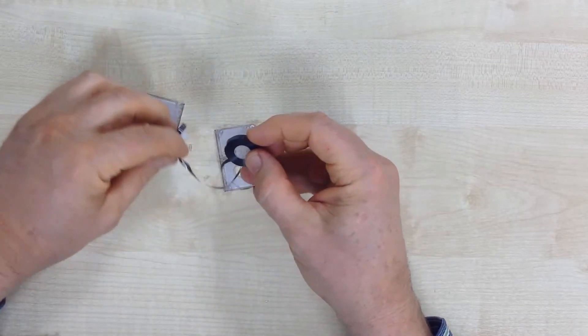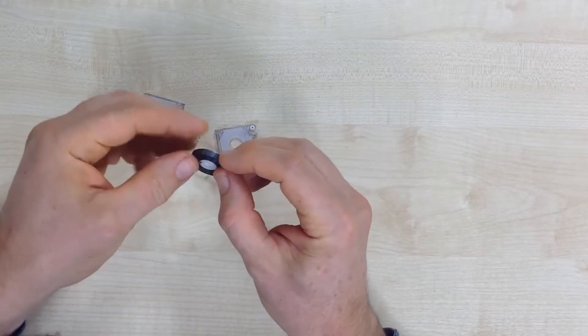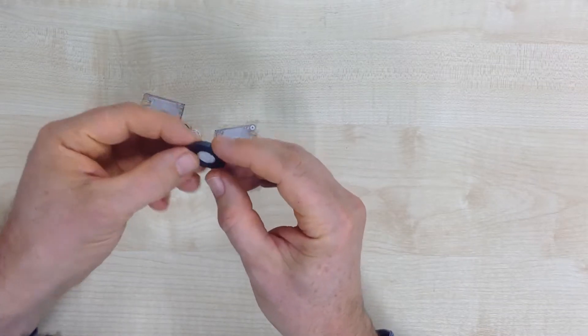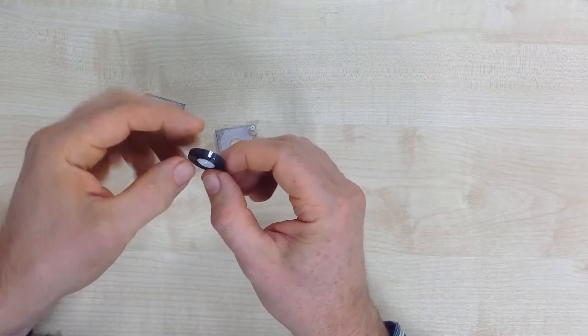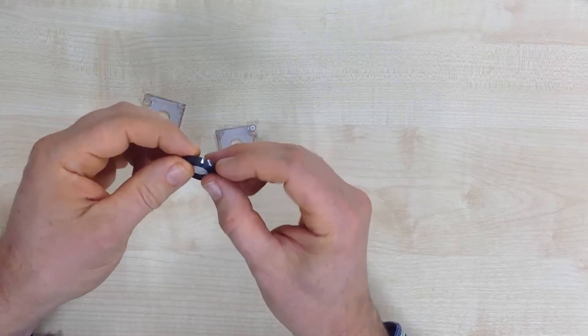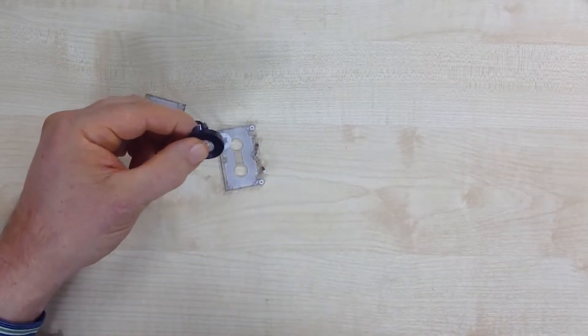Now, if we simply throw that in the bin, someone could conceivably come along and reconstitute it. But we can make that almost virtually impossible to do with the help of a friendly pair of scissors.